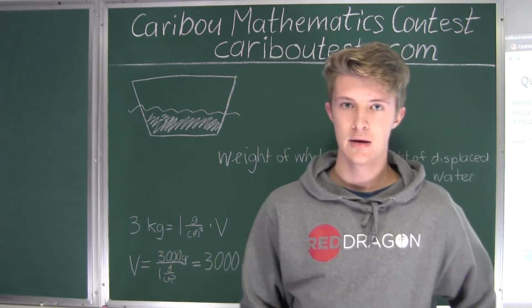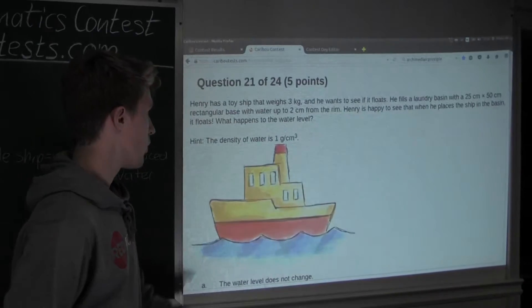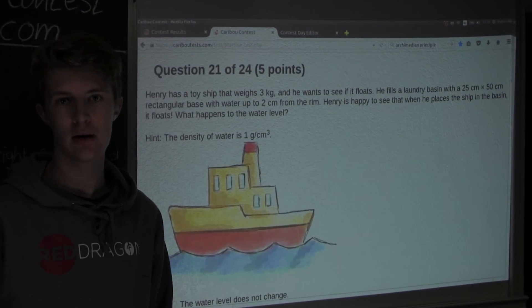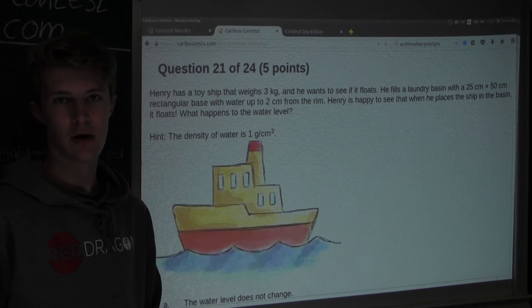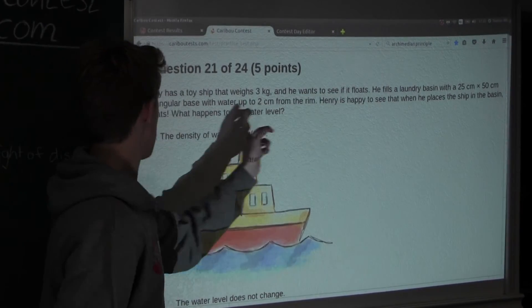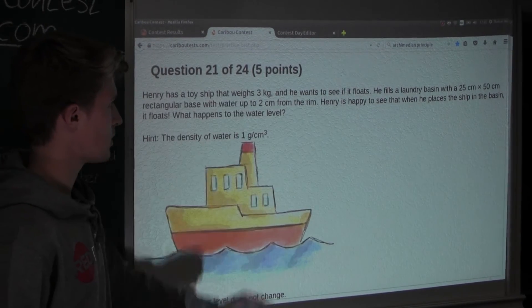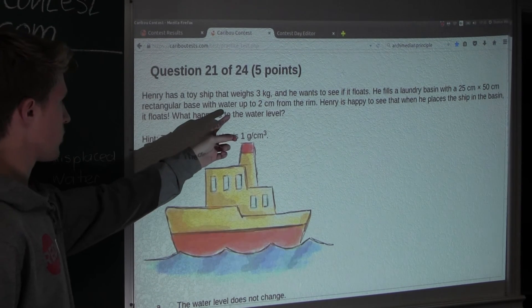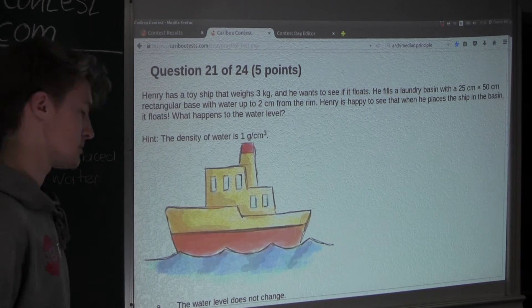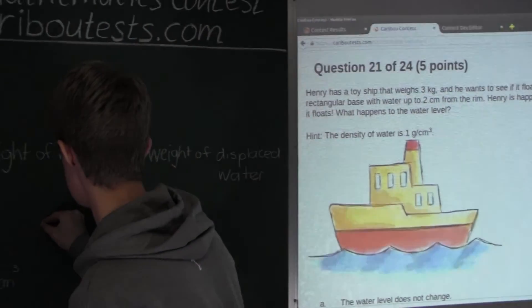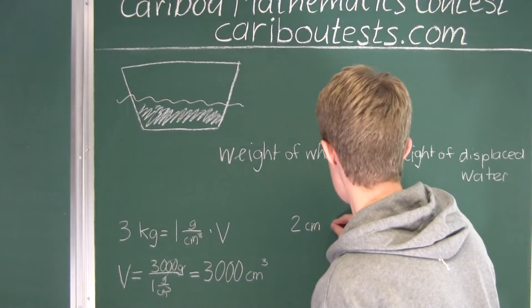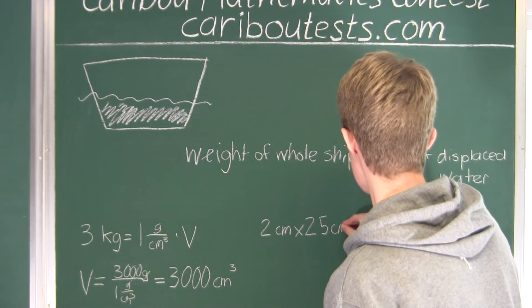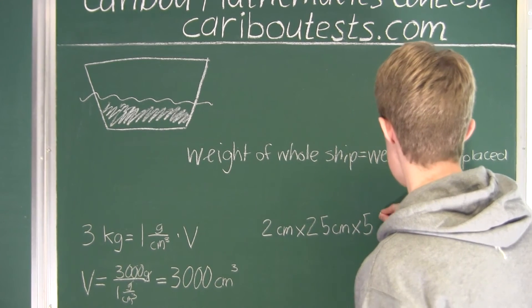Now we want to see how much more water this laundry basin can take before it spills over. We know that it has a rectangular base of 25 cm × 50 cm, and water up to 2 cm from the rim. So we will have 2 cm × 25 cm × 50 cm.